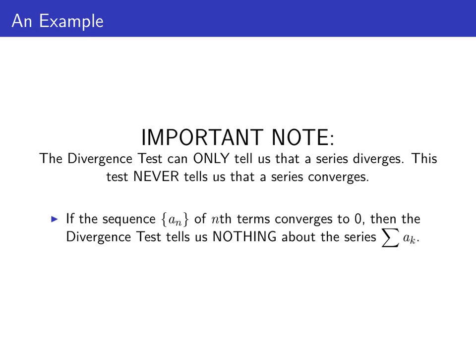If the sequence of n-th terms a sub n actually converges to 0, then this test doesn't apply — the divergence test tells us nothing about the behavior of the series a sub k. The divergence test only applies when the sequence of n-th terms doesn't converge to 0.